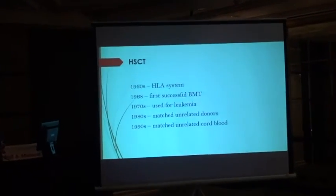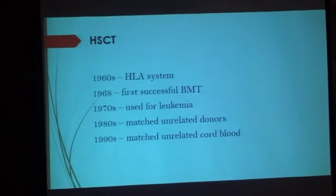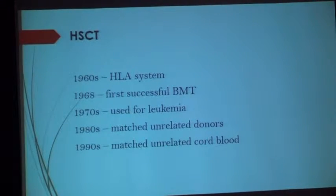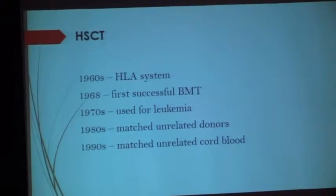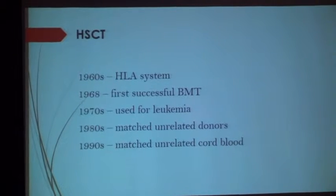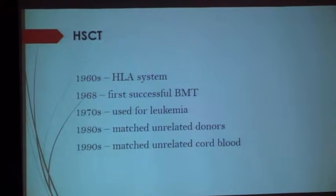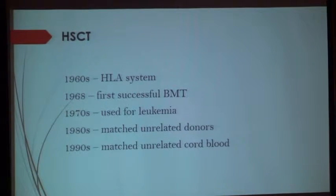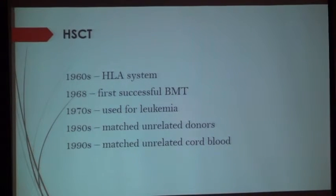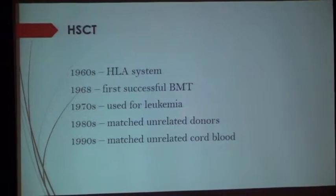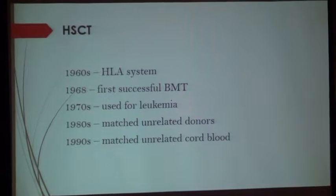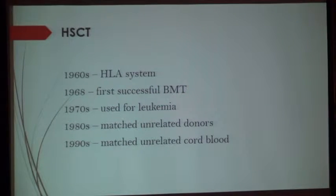In the 1960s, the discovery of the HLA system occurred. In 1968, the first successful transplant was performed. In the 1970s, transplantation for leukemia began. In the 1980s, matched unrelated donors were used. And in the 1990s, cord blood was introduced into the transplantation process.